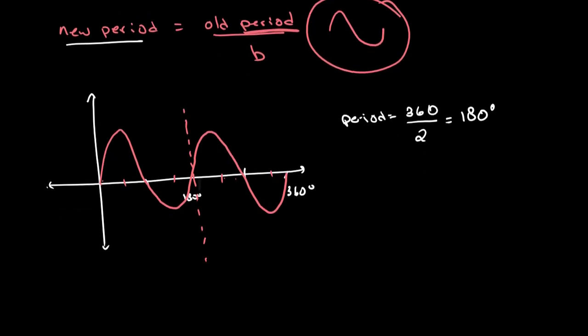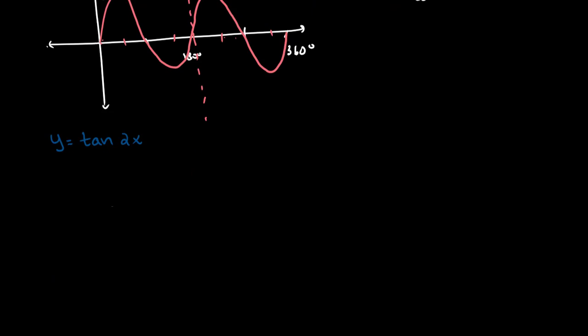Now let's see what would happen if we were to take, let's say, y equals tan of 2x. So let's start out by drawing our graph of y equals tan of x. And now we want to account for this too.